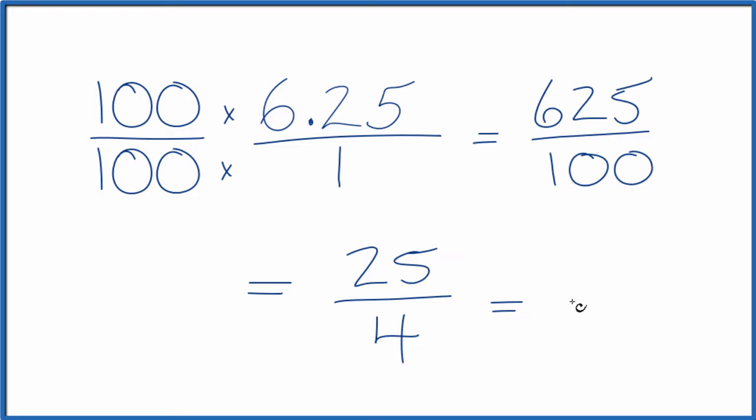4 goes into 25, 6 times 4 is 24, and that would give us one left over, so we'd have 6 and 1 4th. So we could write the fraction 25 fourths as a mixed number 6 and 1 4th.